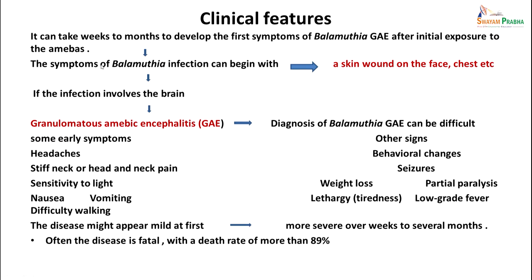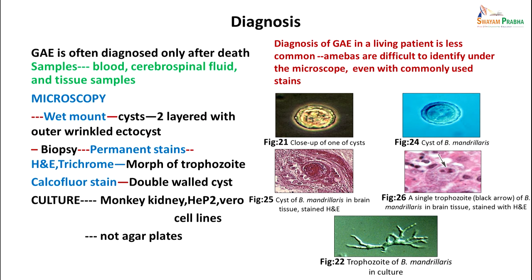As far as clinical features are concerned, it can take weeks to months to develop the first symptoms after exposure to the amoeba. The illness can begin with a skin wound on the face or chest, and later if the infection involves the brain, the patient could present with amoebic meningoencephalitis. From early stages the patient might have headache, stiff neck, sensitivity to light, nausea, vomiting, difficulty in walking, or other behavioral signs. There may also be weight loss, partial paralysis, tiredness, and low grade fever. All these symptoms should be looked into closely if a patient gives a history of contact with these amoebae. The disease is fatal and death occurs in more than 89 percent of cases.